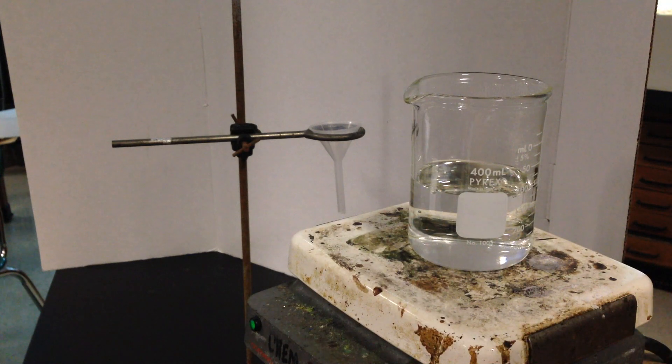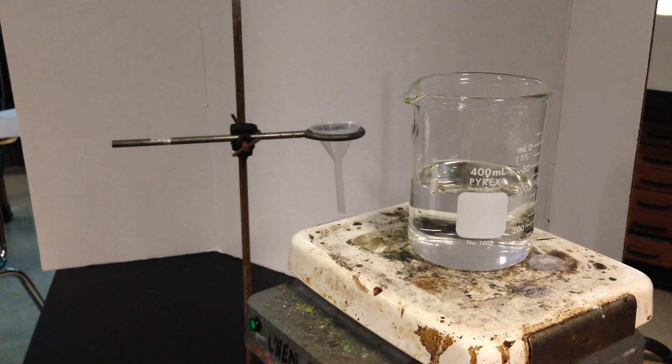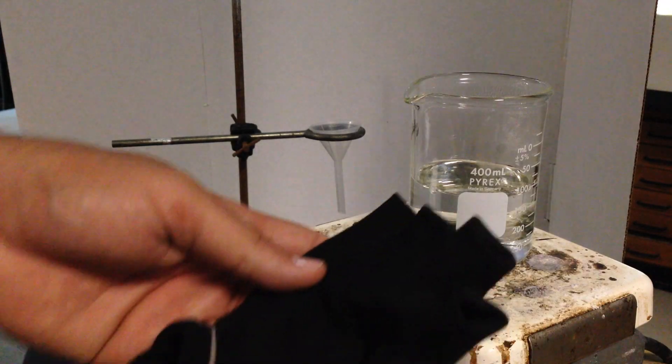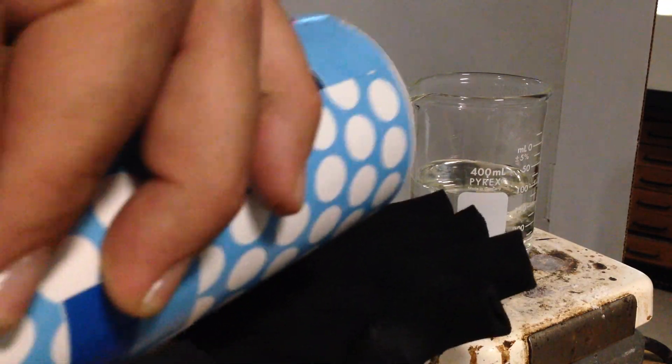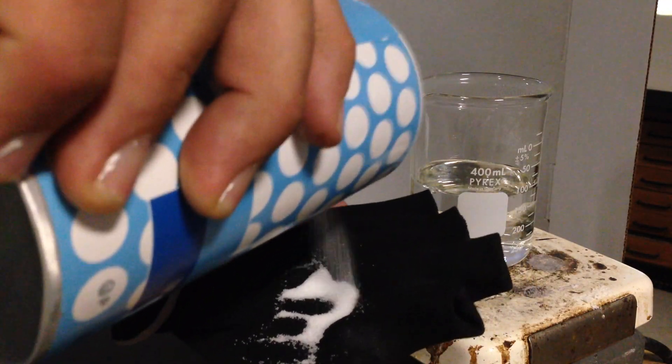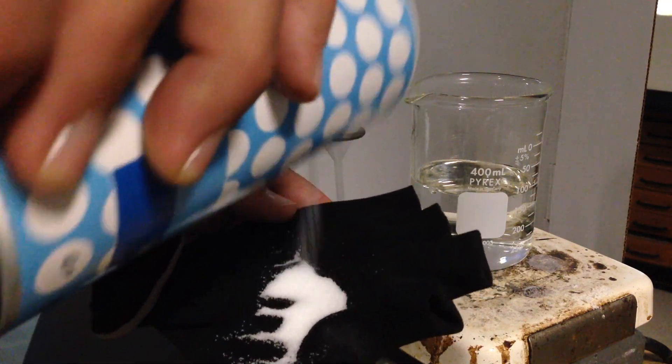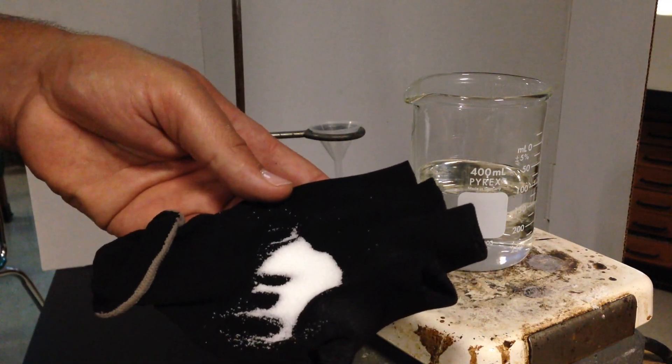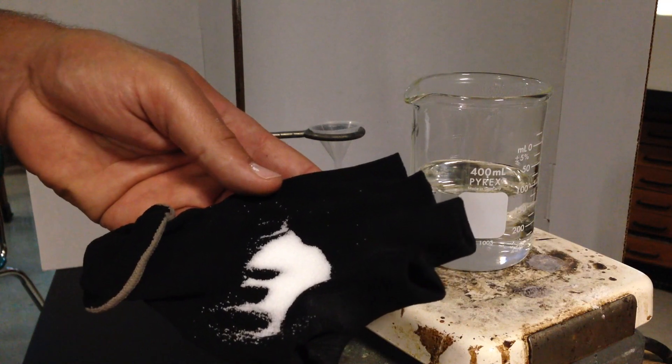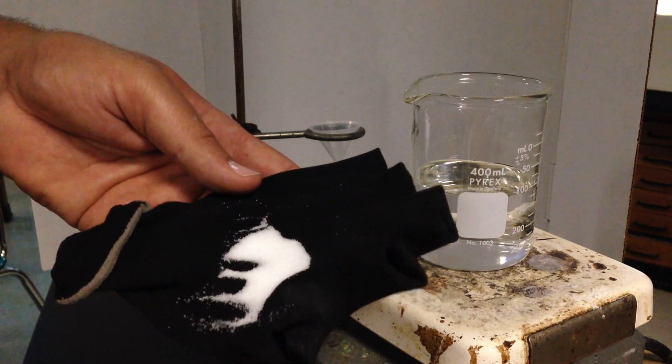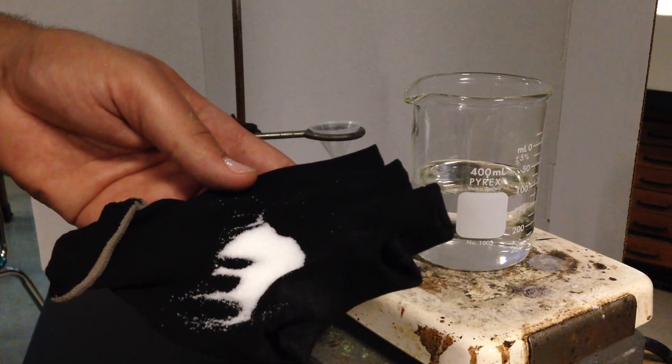I'm going to pour it in a glove here. I got a dark glove, and if I pour some salt in my glove, you can see there's clearly a solid there. The reason why it's white is because light is reflecting off of it.